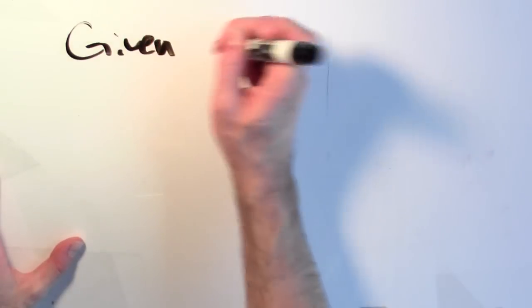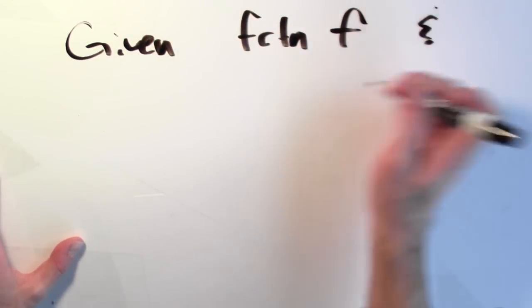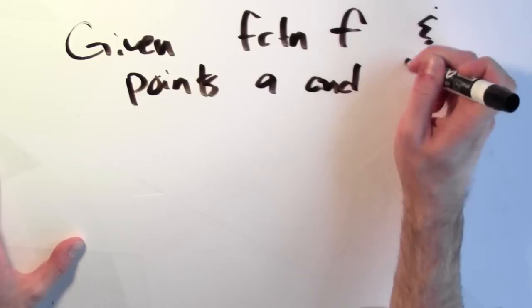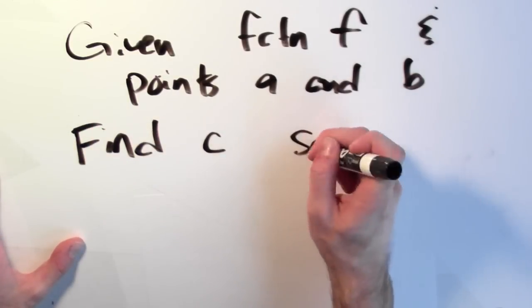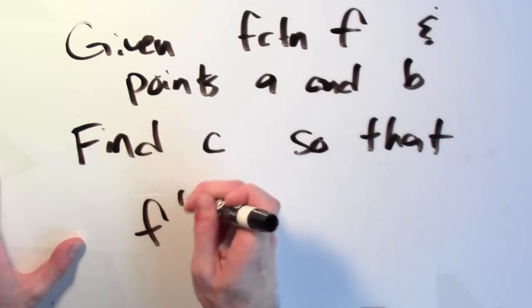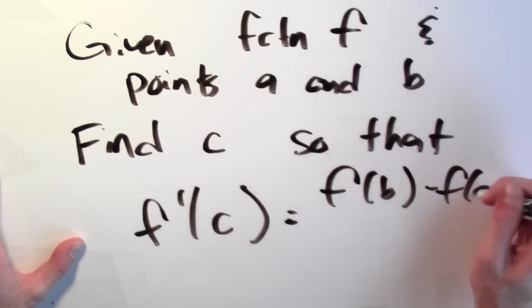A classic problem about the mean value theorem that's often asked in calculus courses goes like this: given a function f and points a and b, find some point c so that f prime of c equals f of b minus f of a all over b minus a. The mean value theorem promises us that as long as f is differentiable on the open interval (a, b) and continuous on the closed interval [a, b], then I can find that point c.